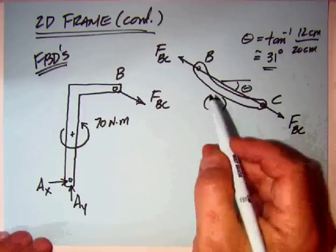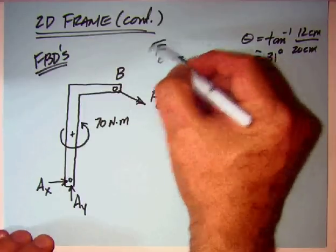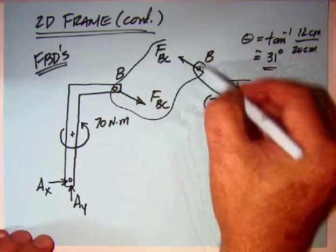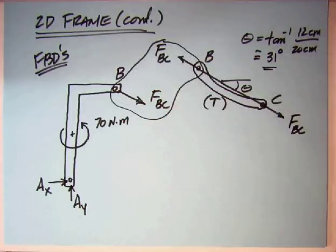I also like when I'm drawing these free bodies, especially with multiple pieces, to somehow connect Newton's third law. That's another big mistake - to have those not opposite to each other. Two bodies in contact, the forces are equal opposite and have the same line of action. I've also gone and calculated the angle to this. This is the inverse tangent of 12 centimeters over 20 centimeters based on the dimensions that were given on the previous slide. That came out to be about 31 degrees.